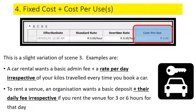Scenario four is a slight variation of the previous scenario. Here you have a fixed cost plus a cost per use. For example, a car rental charges a basic admin fee plus a rate per day, irrespective of kilometres travelled or return time. Similarly, when you hire a venue there may be a basic cost plus a daily fee irrespective of how long you rent the venue for that day.